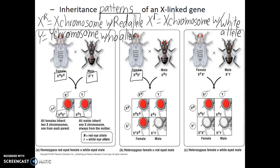Now if these females are then crossed to a male with normal red eyes and we look at their offspring: the male can make two types of gametes, and the female can make two types of gametes — X with a capital R and X with a lowercase r. All of the daughters will receive an X chromosome from both the father and the mother. In this case all of the daughters will have red eyes because they receive at least one copy of X capital R. When we look at the sons, the sons receive their Y chromosome from their dad and their X chromosome from their mother. Since there are two possible options that the mother could provide, we see that half of the sons will have red eyes and half of the sons will have white eyes.